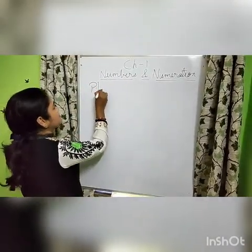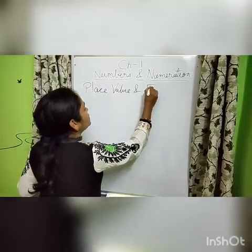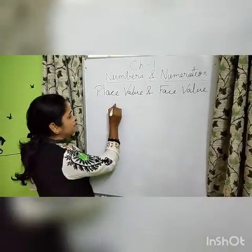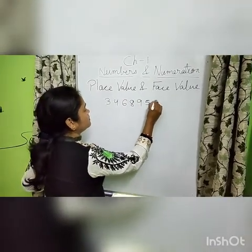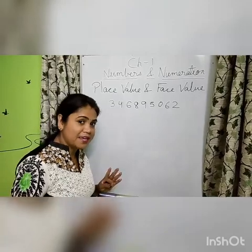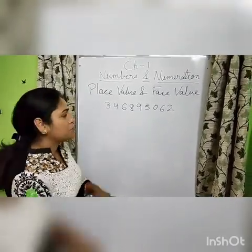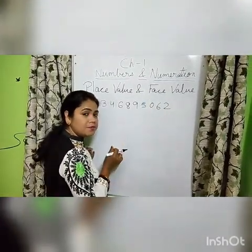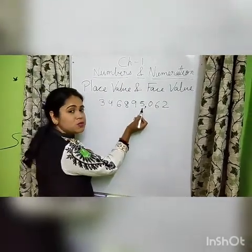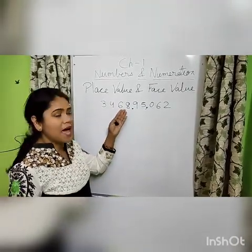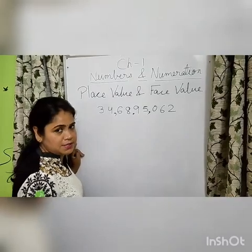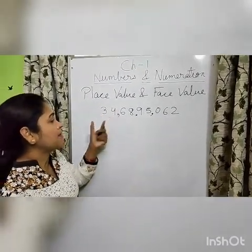We will find place value and face value. Suppose I am taking one number. This is the number I have taken. Last video, you saw how we name it and group it into periods. First, we take one period — three digits — and put a comma. Then the second period is the thousands period: two digits, put a comma. Third is the lakh period — two digits — and then it is the crore period.